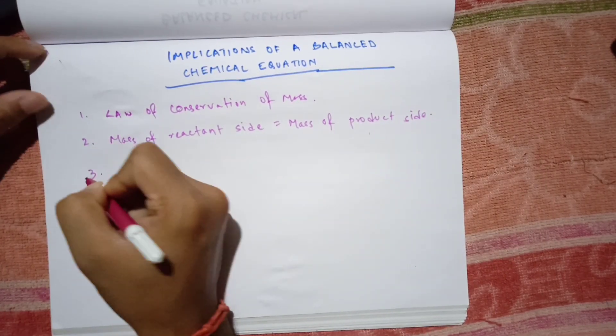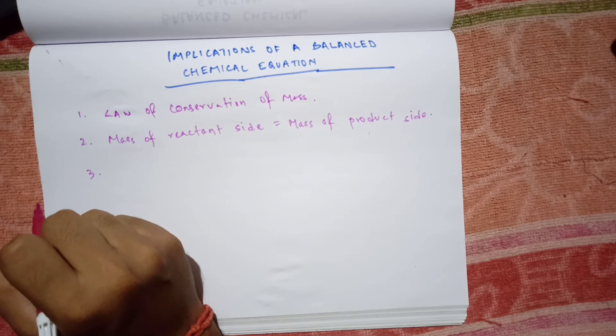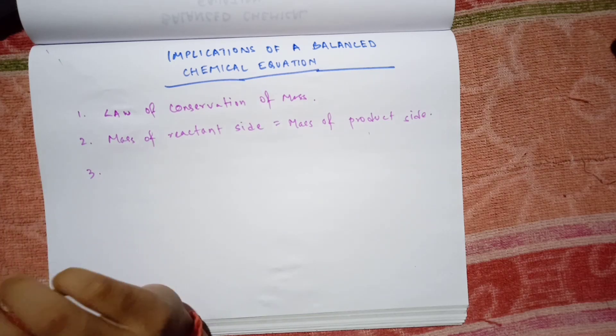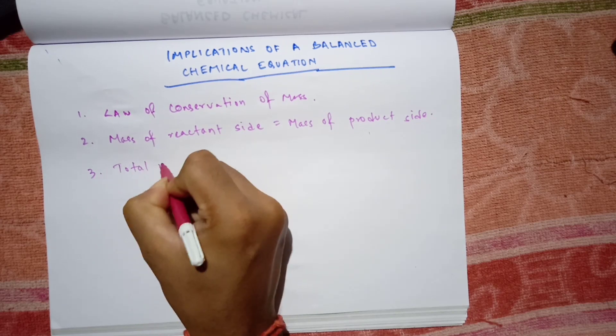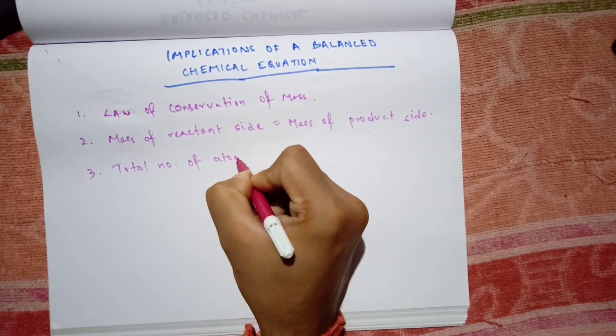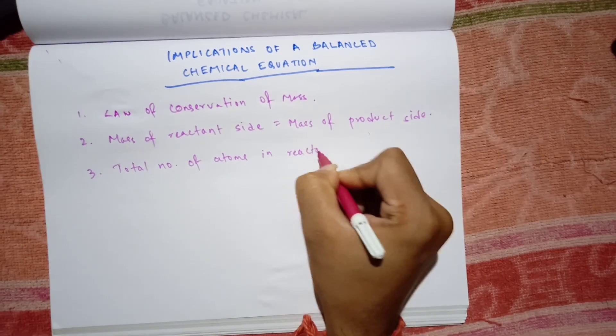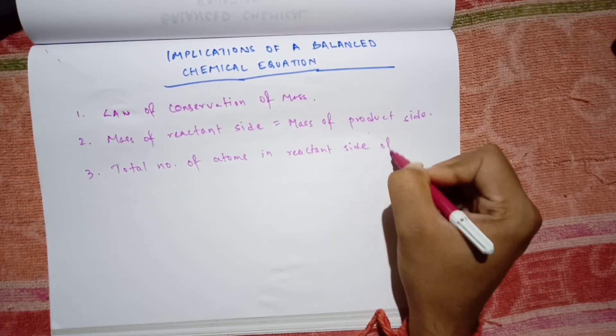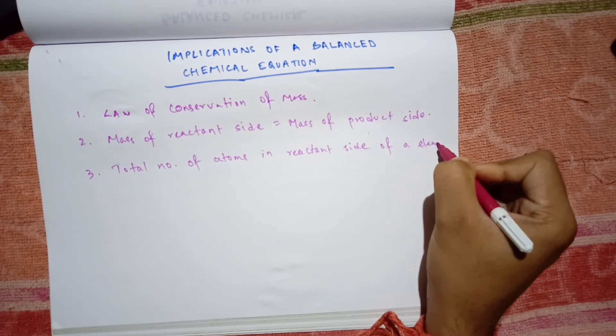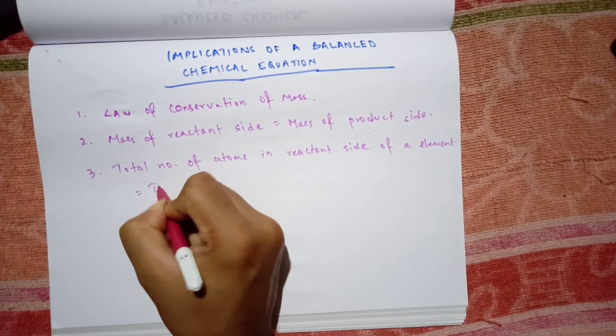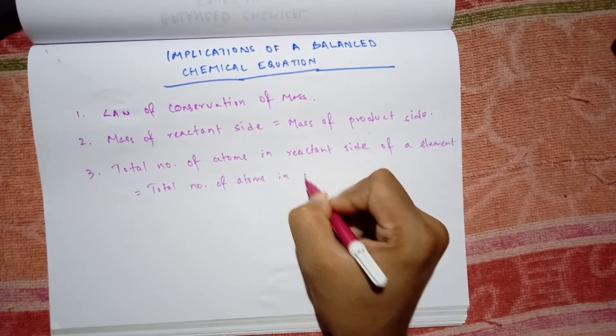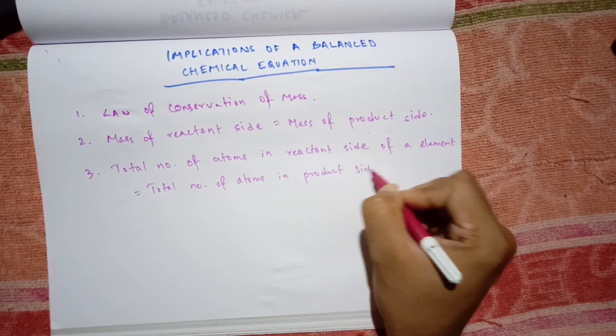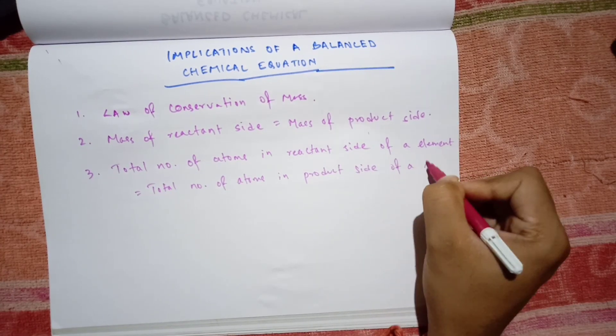Number three: therefore it can be said that the total number of atoms of the element in the reactant side will be equal to the total number of atoms of the element in the product side. So total number of atoms in the reactant side of element should be equal to the total number of atoms in the product side of the element.